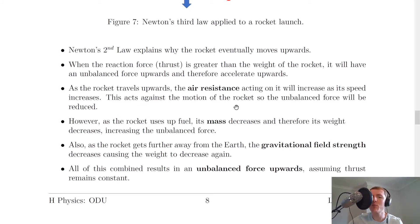This acts against the motion of the rocket so the unbalanced force will be reduced. And that's not really what we want. We want the rocket to be accelerating upwards with a big unbalanced force. So it must be that the two other things contribute to increasing the unbalanced force instead.